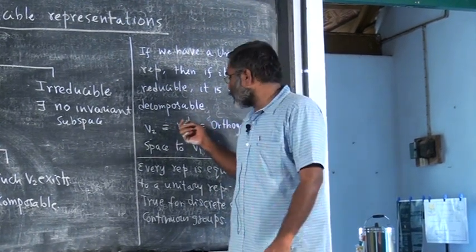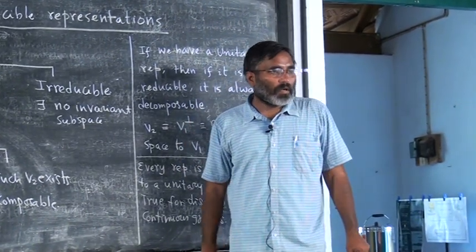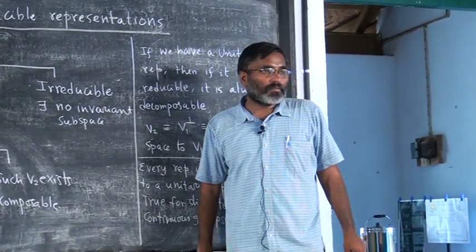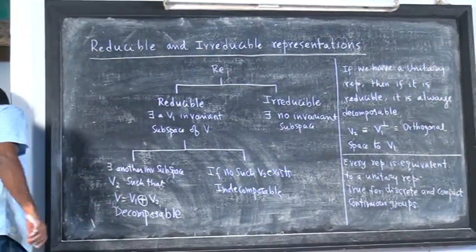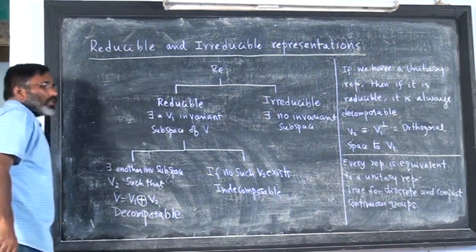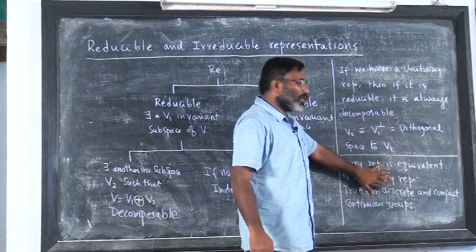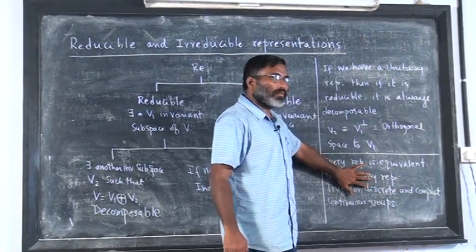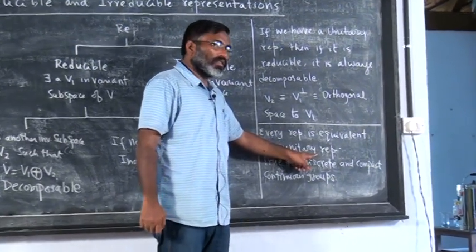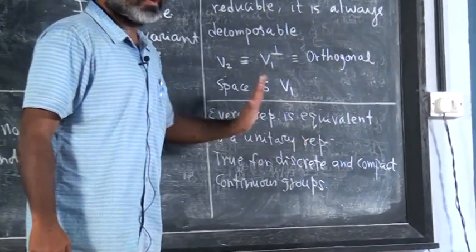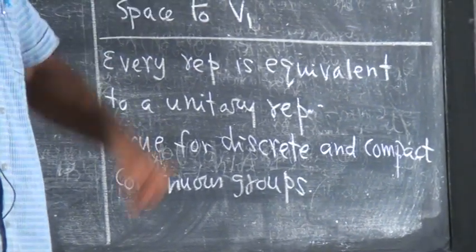This is only a symbol — basically it is orthogonality with respect to that Hermitian inner product that we have defined. Now, what we learn from this is that if a representation is equivalent to a unitary representation, we can work with only unitary representations. It does not matter because they are equivalent to some unitary representation.